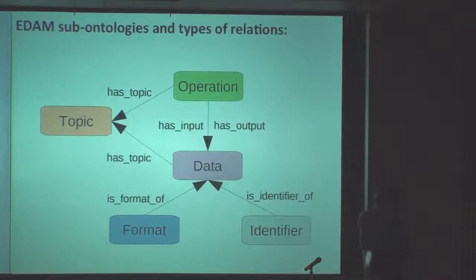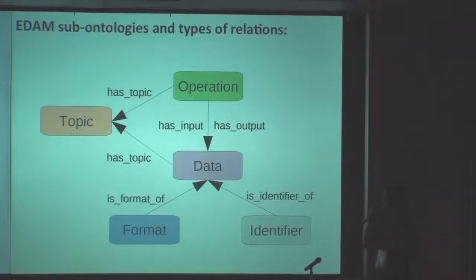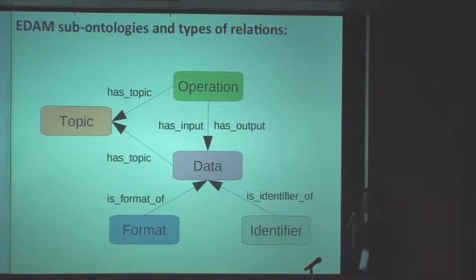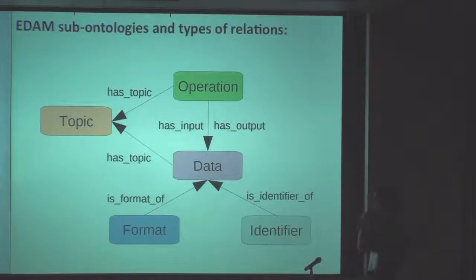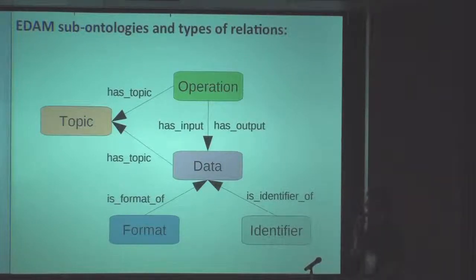The colored ones shown here are the four main sub-ontologies of EDAM: operation, topic, data, and format. Identifiers and other sub-ontologies are actually part of data. There are some relations maintained within EDAM between the concepts, and there are a couple more relations or properties defined in EDAM, but they are not maintained between the concepts.